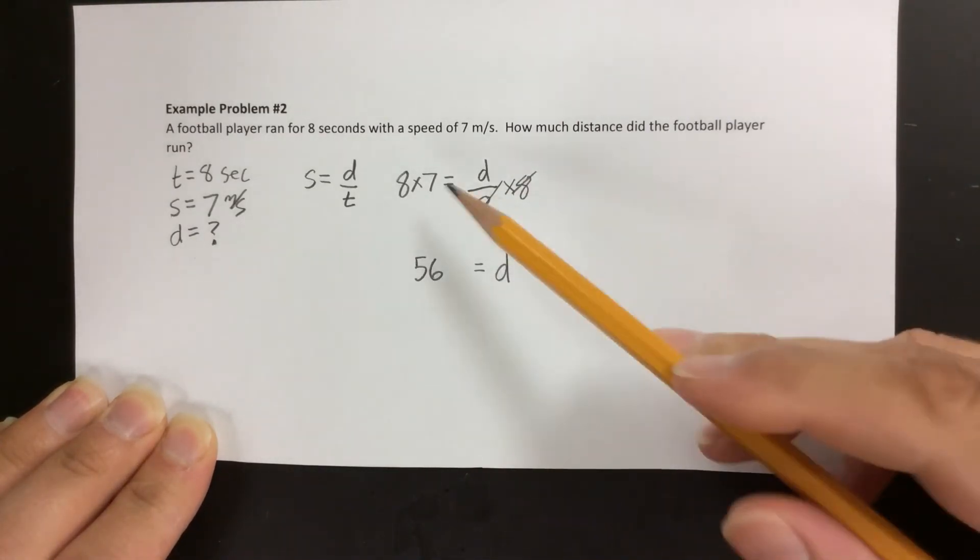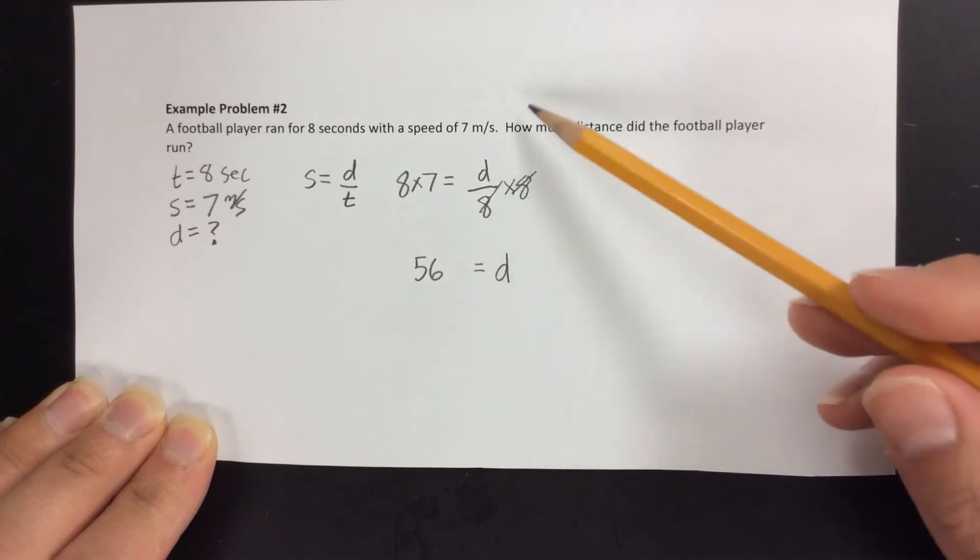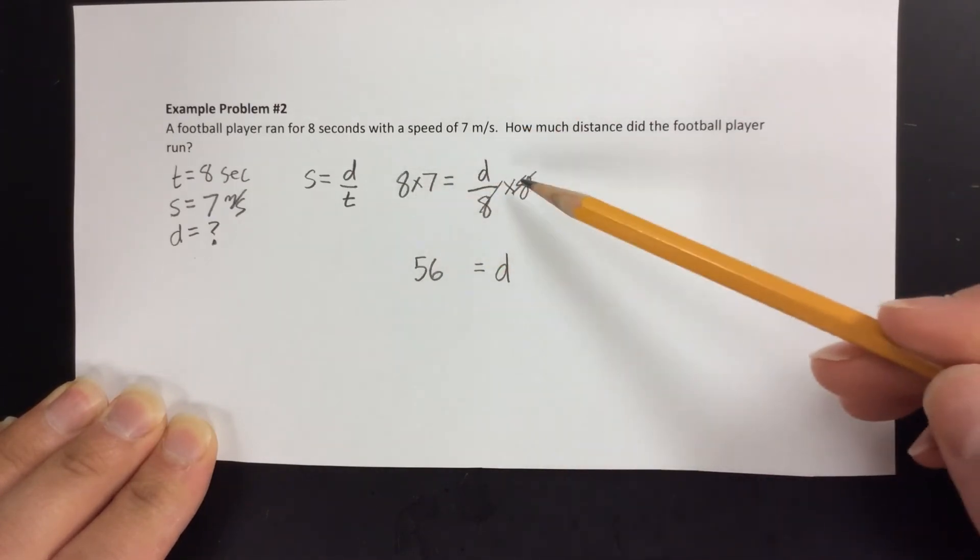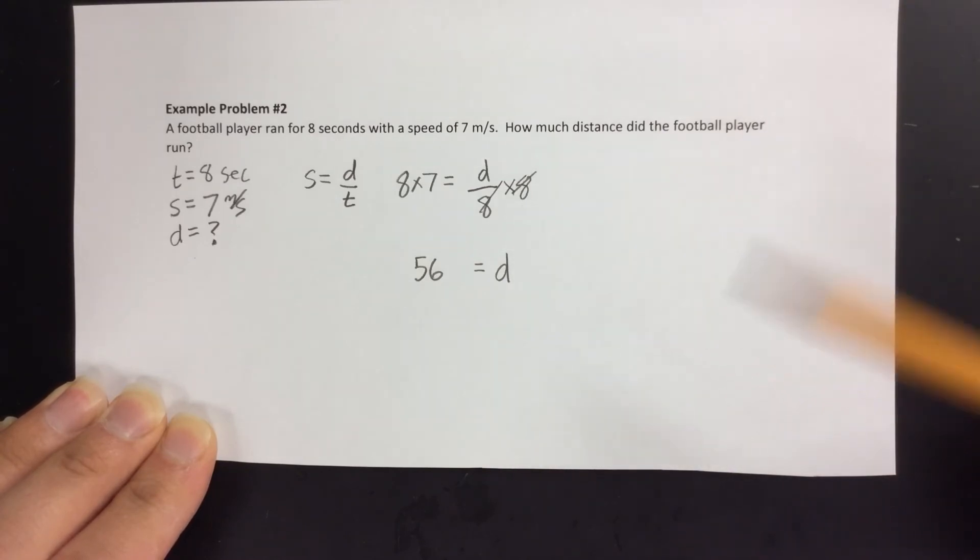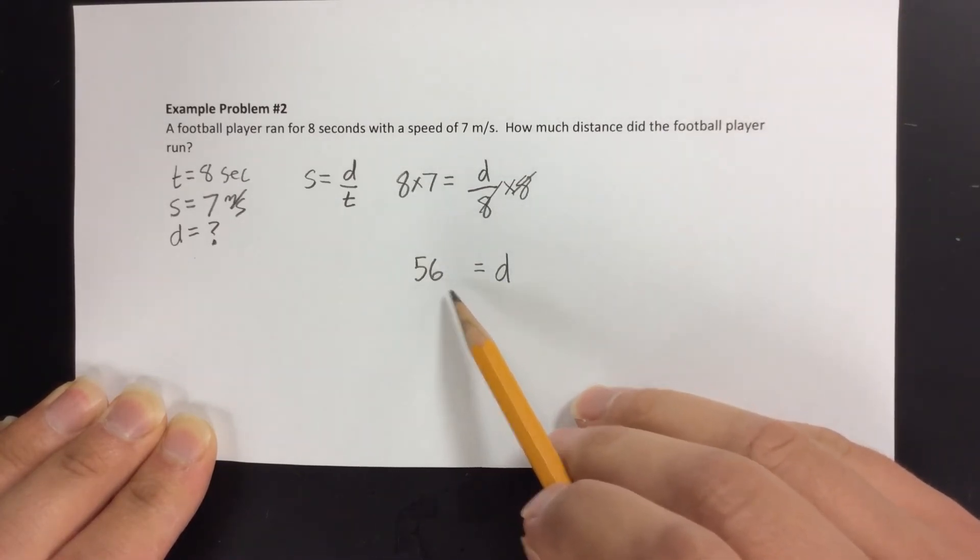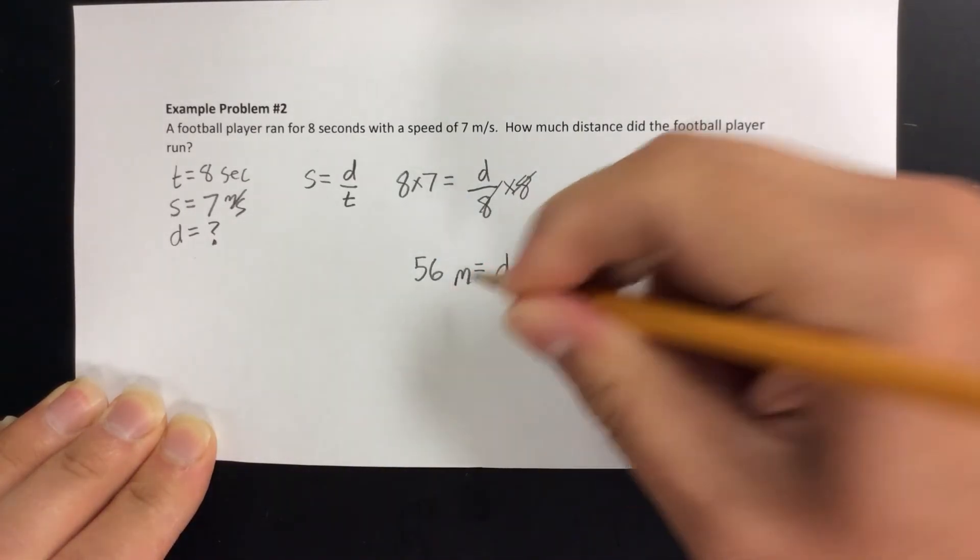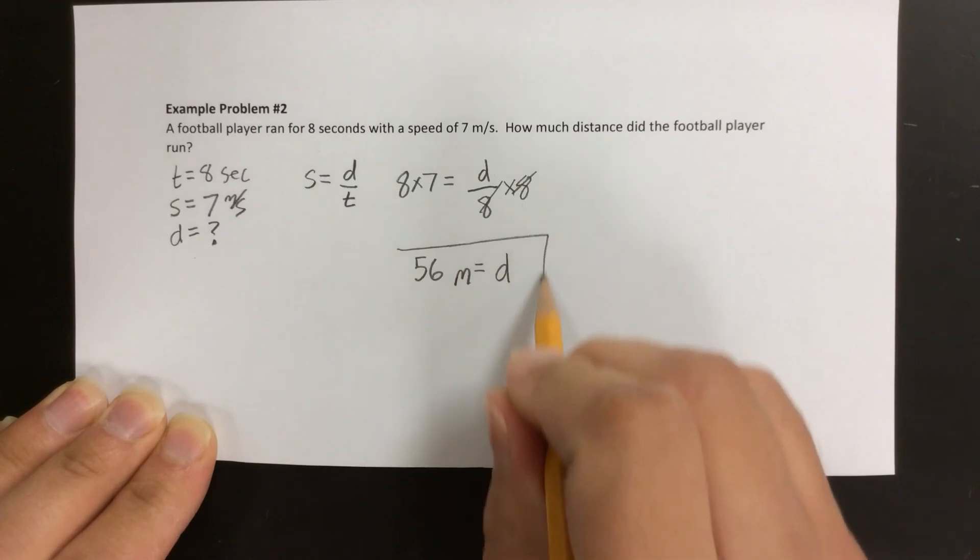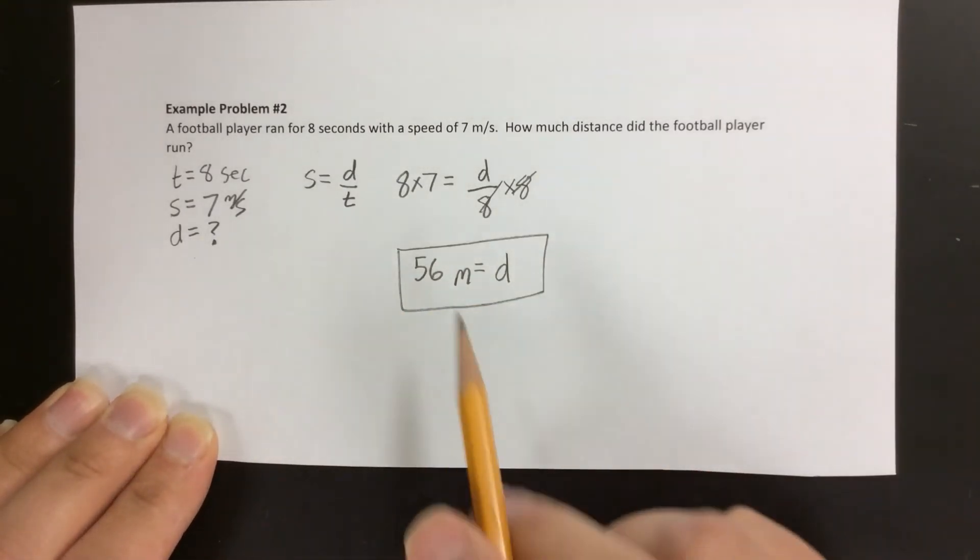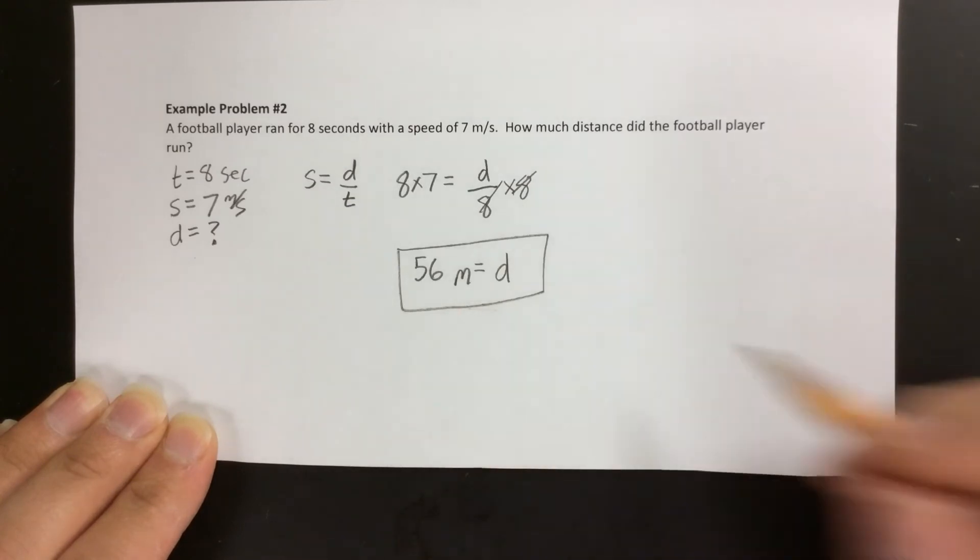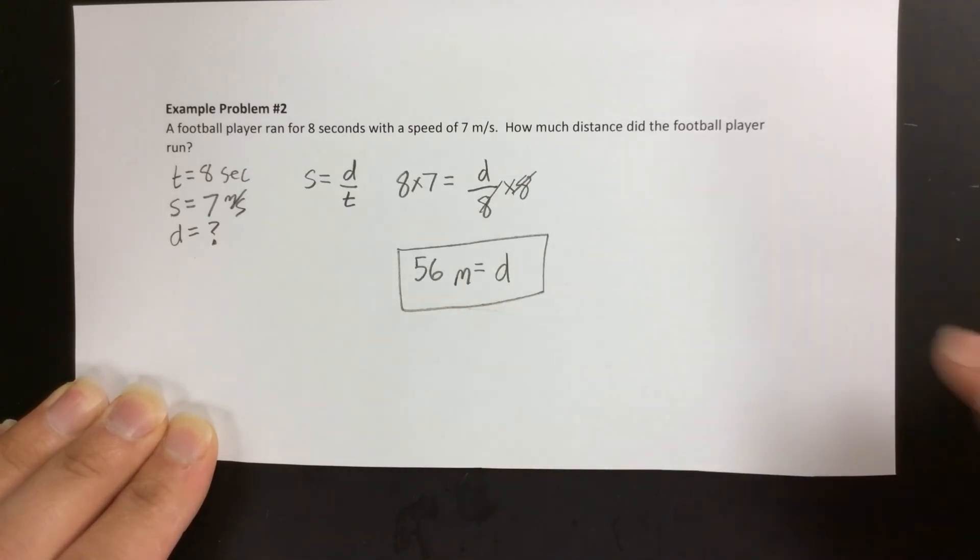That's what I mean by showing work - not long multiplication, just showing what you did to both sides to solve for what you needed to find. Finally, we need to come up with units. Since this is a distance, the units will be in meters. We can box it, and that's our final answer. You could put D = 56 meters. It's the same thing.